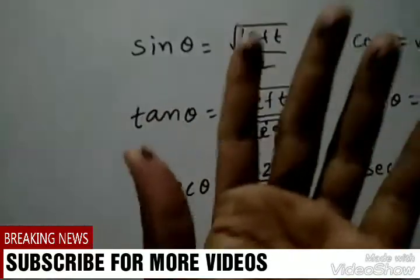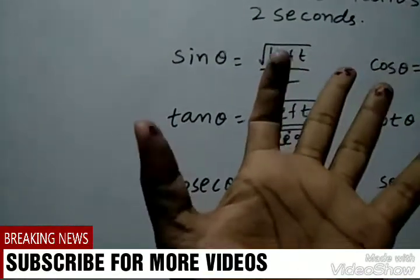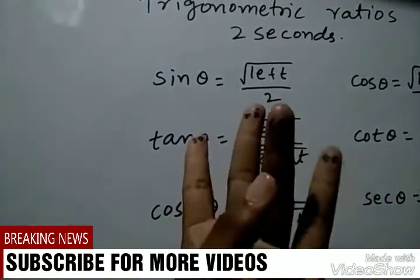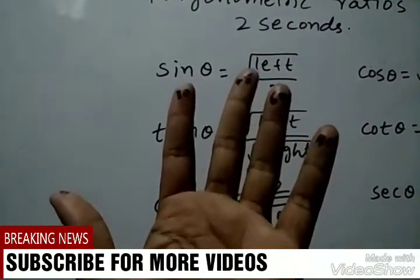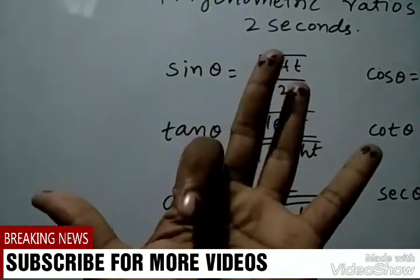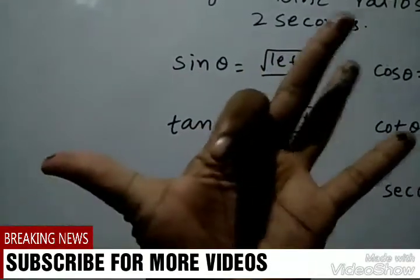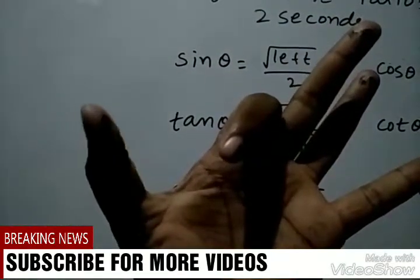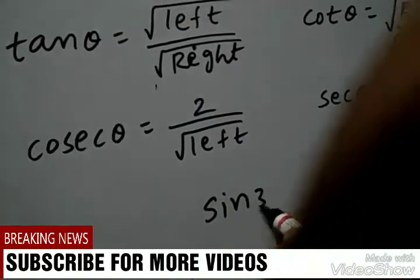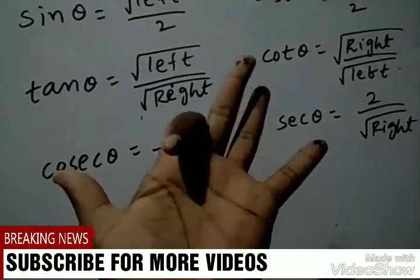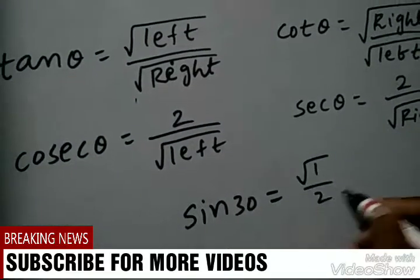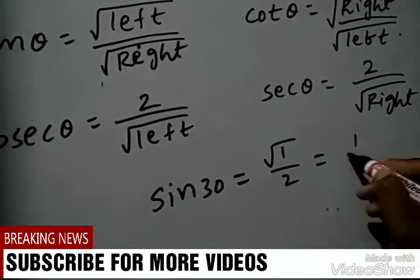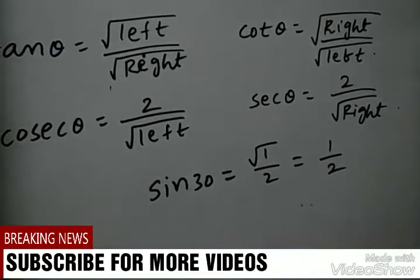So take your left hand. It is 0 degrees, it is 30 degrees, it is 45 degrees, it is 60 degrees, it is 90 degrees. For sin 30, fold the finger for 30 degrees. Root left means left side — how many fingers? Only 1. So sin 30 is equal to root 1 by 2, which equals 1 by 2.